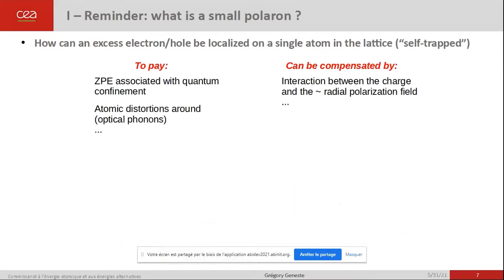Let us focus on this electron or hole in the lattice when it is localized on a single atom, and examine by which mechanism this localization is possible. When you enforce the localization of an elementary charge on one atom in a crystal, you have to pay several energetic contributions, among which the quantum zero-point energy associated with its confinement and the atomic distortions created all around, corresponding to a kind of radial polarization of the environment of the charge. However, this cost can be compensated by a favorable interaction between the localized charge and the field of polar distortions around it, and if so, you can stabilize the small polaron.